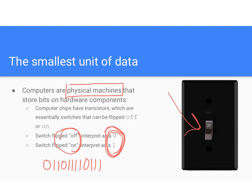A computer doesn't have zeros and ones inside of it. It has switches, and it's the way that we interpret the state of those transistors that gives them their meaning as zeros and ones, trues and falses.